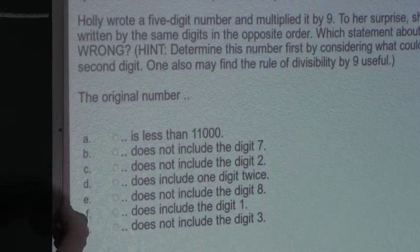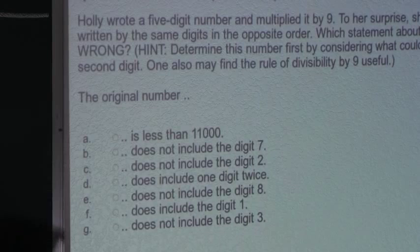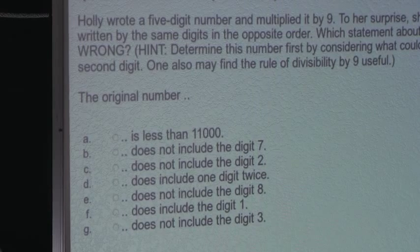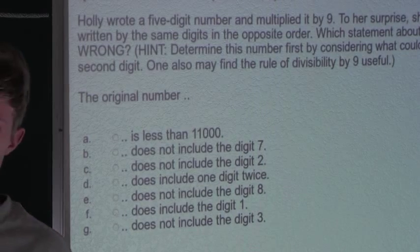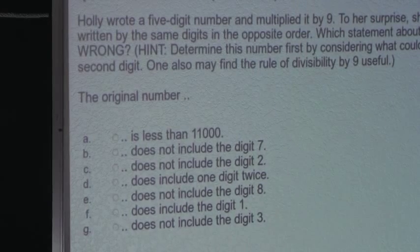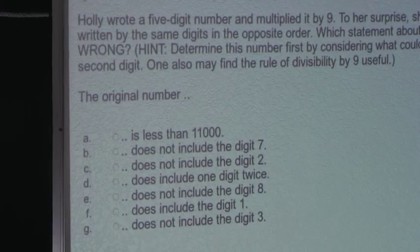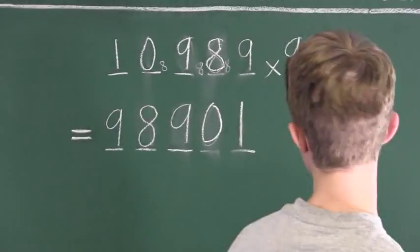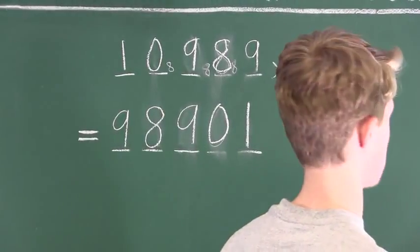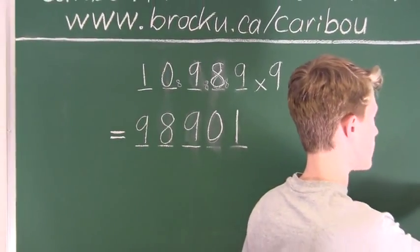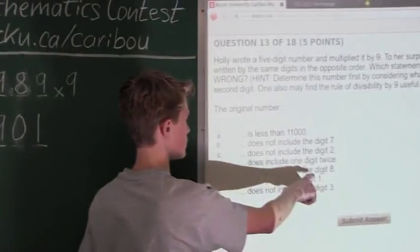Let's confirm by checking options F and G. Option F says the original number does include the digit 1 — that is correct, because the number is 10,989. Option G says the original number does not include the digit 3 — that is correct. So the answer is option E: the original number does not include the digit 8, which is false.